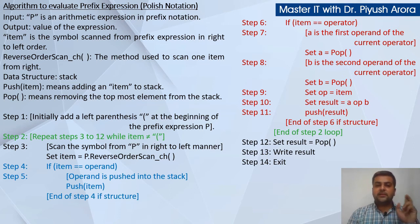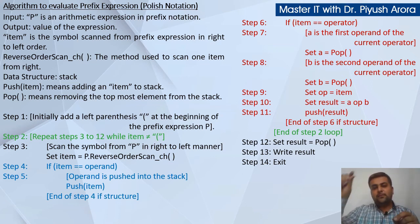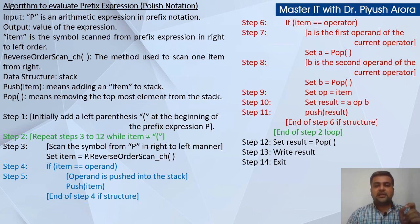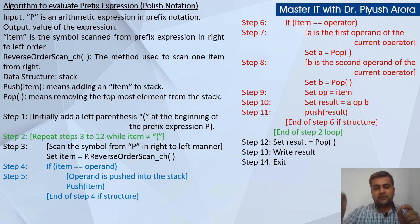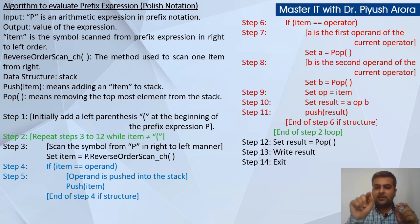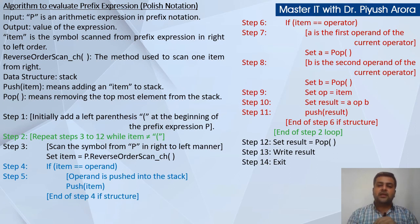If item equals operator — jise aapne scan kiya hai voh ek operator hai — toh: a is the first operand of the current operator. Set a equal to pop — pehle pop kijiye, jo bhi operand pop hua use a mein assign kar dijiye. Step number 8: b is the second operand of the current operator. Set b equal to pop — next value stack mein se pop karenge, use b mein assign karenge. Step number 9: set op equal to item — jis item ko aapne scan kiya voh operator hai, use op naam ke variable mein assign kar dijiye.